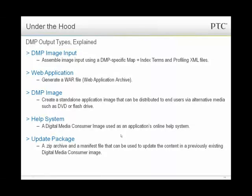The help system is an image that can actually be built into an application's online help. As a bit of trivia: DITA Open Toolkit has something called Eclipse Help, which is a help system specific for Eclipse, an IDE. The help system feature of Digital Media Publisher is similar in that you can make it the help system of an application, or deploy it separately as a web app. And there are update packages, which are basically a zip archive and manifest file that people can pick up to update their images.